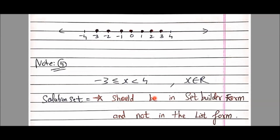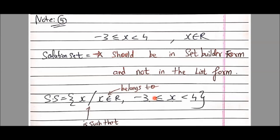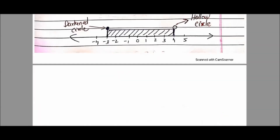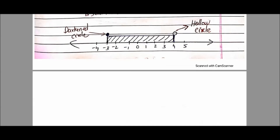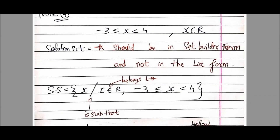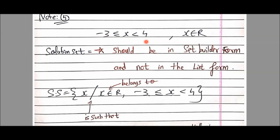Now comes the most important note: note number four. The range is -3 ≤ X < 4, and X belongs to real numbers (capital R). The solution set of real numbers will never be written in list form with commas. It must be written in set builder form only — not in list form. Why? Because real numbers include decimal numbers, and between any two integers there are infinite decimal values.